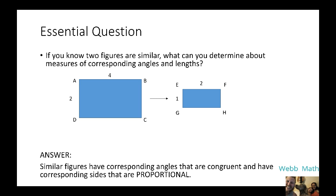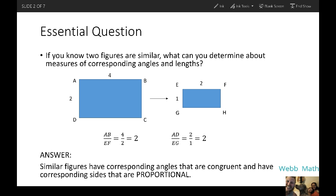If you notice the lengths given to you, the dimensions: AD is 2, AB is 4, and the one on the right EG is 1 and EF is 2. So if we look here, AB was 4 and EF, which is basically the same side after the transformation of that object, is now 2.